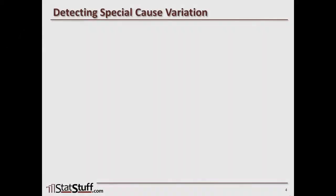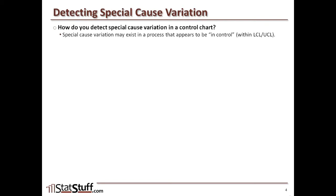Before we dive into the eight different tests, let's explore the different zones on a control chart and how they'll help us understand how the eight tests work. Special cause variation could exist in a process that appears to be in control — falling within the lower and upper control limits.